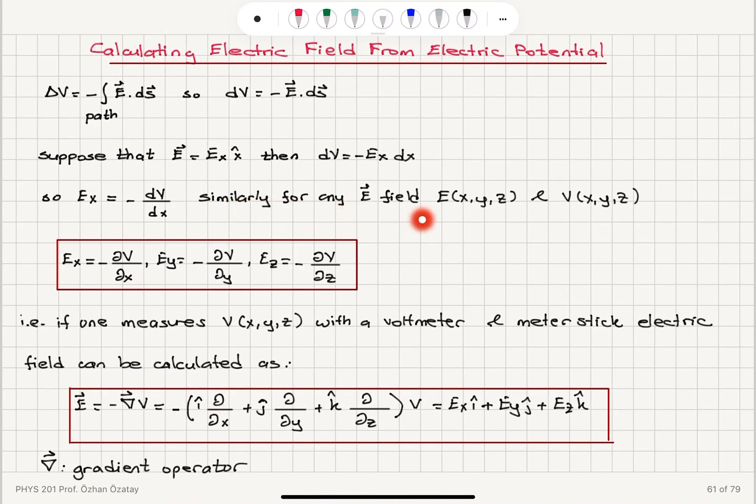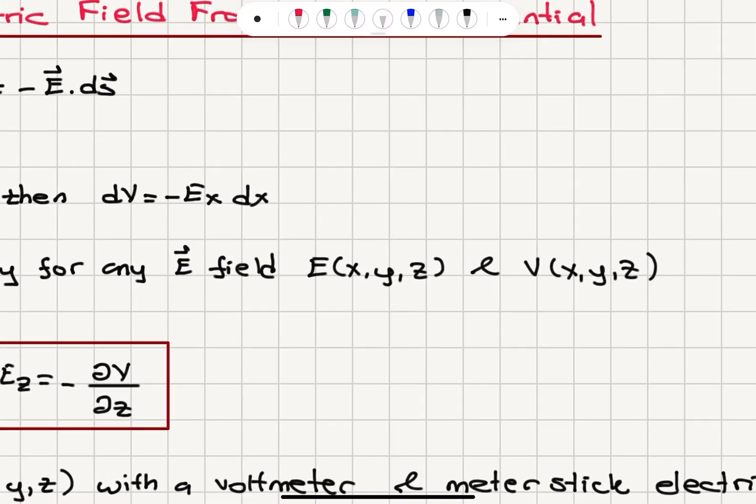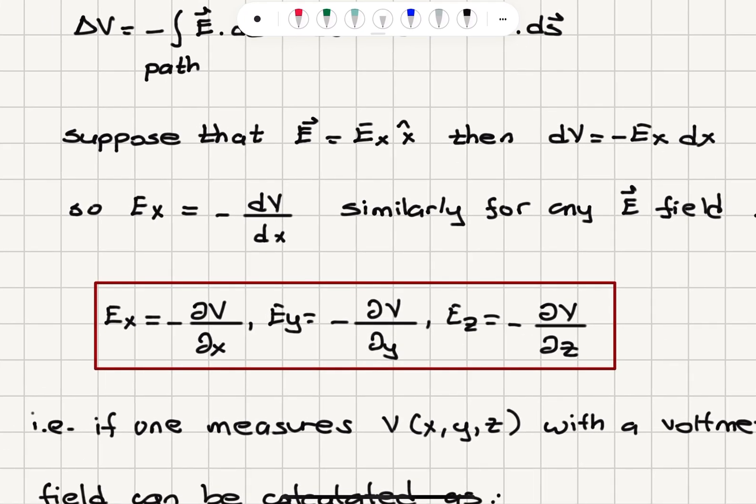Similarly, for any electric field, if we have in general x, y, and z components, the potential has x, y, and z dependence. Then we can write an electric field x-component as Ex is equal to minus partial derivative of the potential with respect to the x-variable.